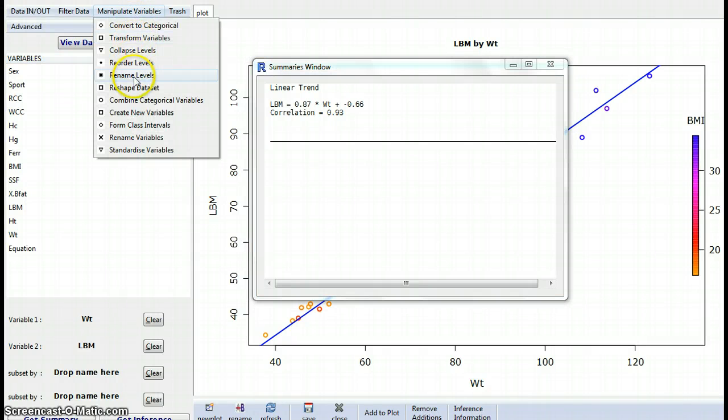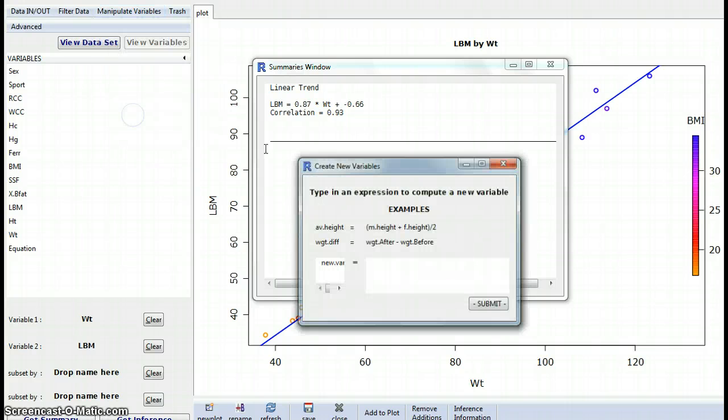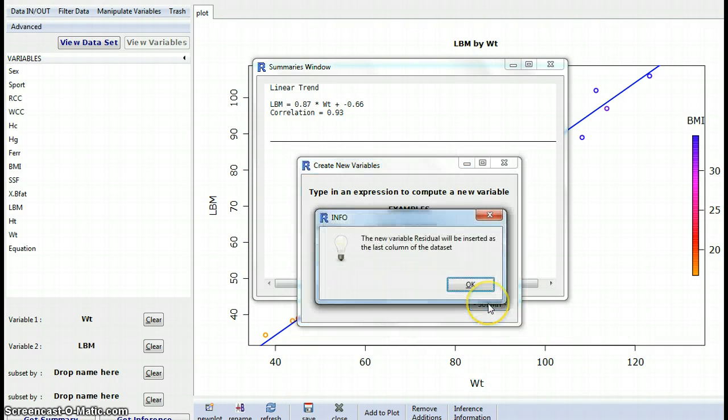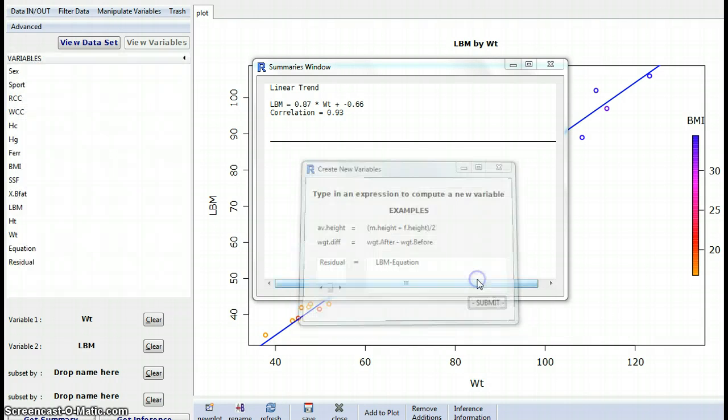Manipulate variables again. Add another variable and this one's going to be called residual. And remember, I told you the residual is always the difference between the raw data and the equation. So in here I'm going to write LBM, i.e., the dependent variable, LBM minus equation, and spell it the same way. Capitals are all important. And great, it liked me.